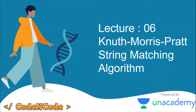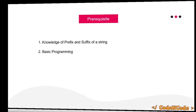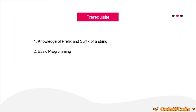Hello guys, this is Code and Code, and this is the sixth lecture of the string algorithm series. In this lecture we are going to study the KMP string matching algorithm. The prerequisites are very basic — you need knowledge of prefixes and suffixes of a string and just basic programming, and you will be good to go.